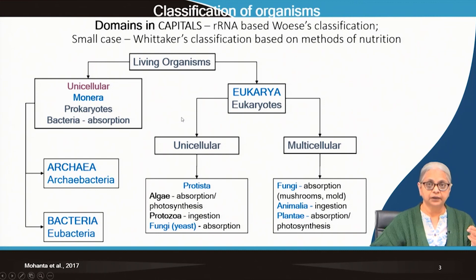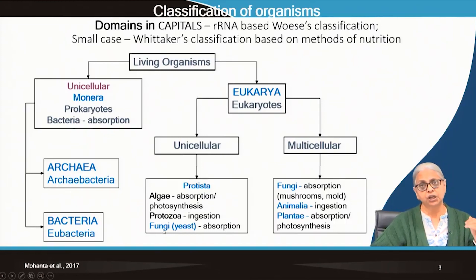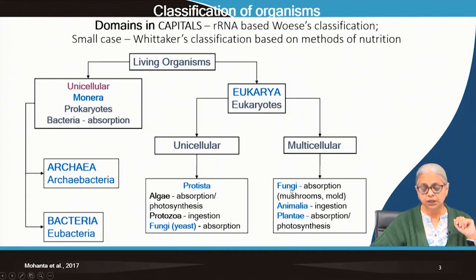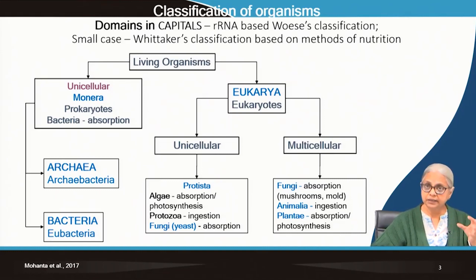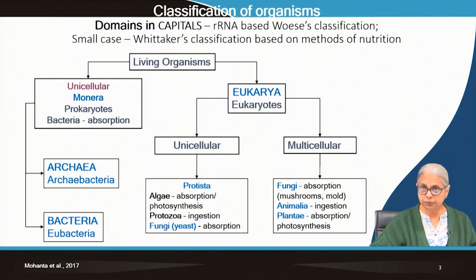Within eukaryotes you can have two groups: unicellular eukaryotes and multicellular eukaryotes. Unicellular eukaryotes are called protists — Protista is the kingdom name based on Whittaker's classification. They include algae, protozoa, and fungi-like examples such as yeast. Multicellular organisms can include fungi — so when you have mushrooms, you are dealing with a multicellular eukaryote. Mold can be both. Then you have plants and animals. This is the broad Whittaker's classification, based on methods of nutrition.